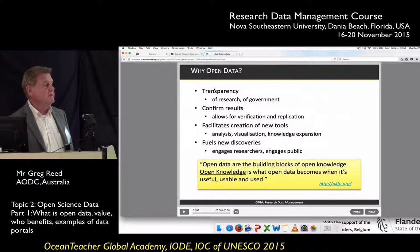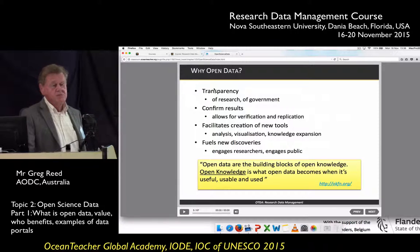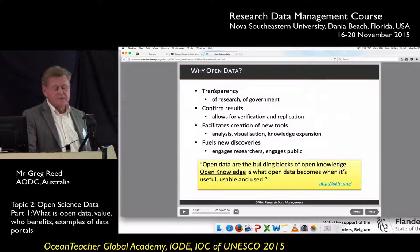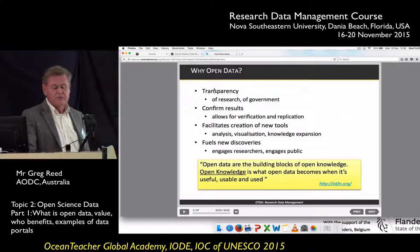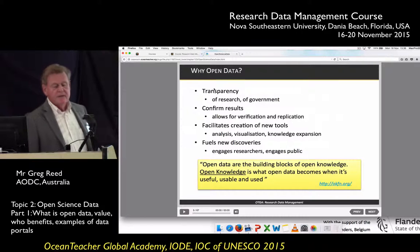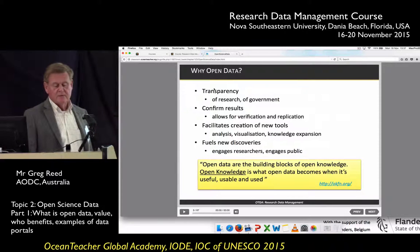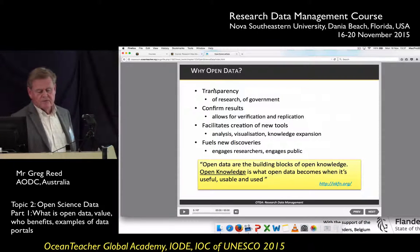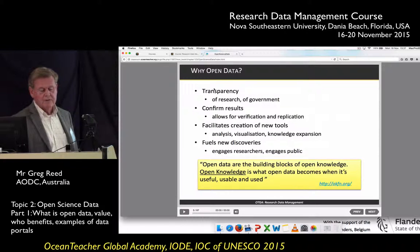It's also important that you can confirm the results of your research, so this allows verification and replication either by yourself or by your peers. It facilitates creation of new tools, so researchers can develop analysis tools to analyze or visualize their data. It also fuels new discoveries — if researchers can share data, they can come up with different discoveries, so it's important that the data is made available.